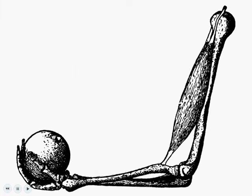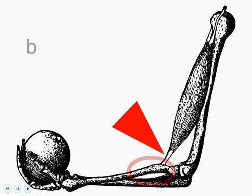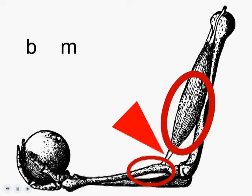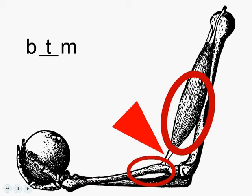Let's have a look at this picture of an arm. What is this thing right here? Well, it's connecting bone to muscle, so it must be a tendon. That's right, a tendon — bone to muscle spells 'bottom.'